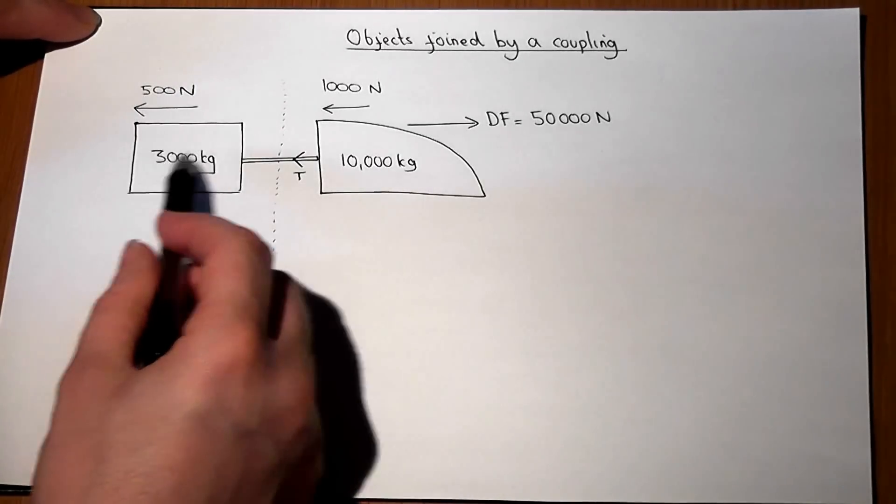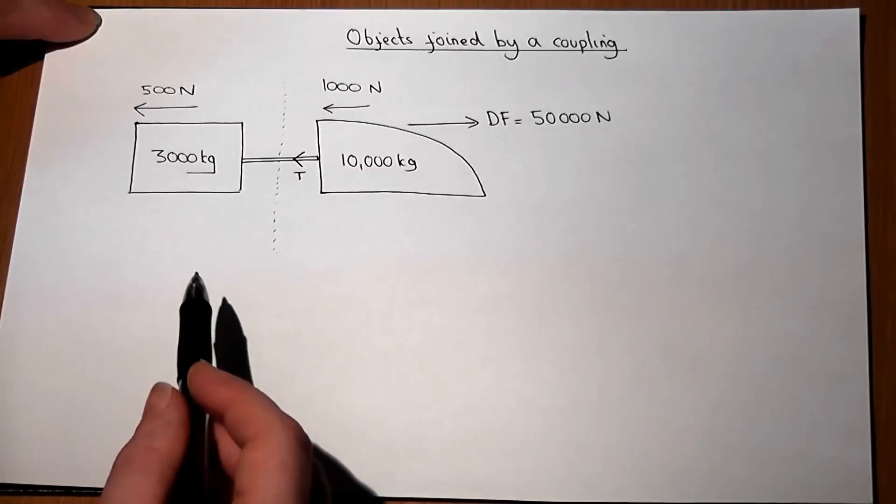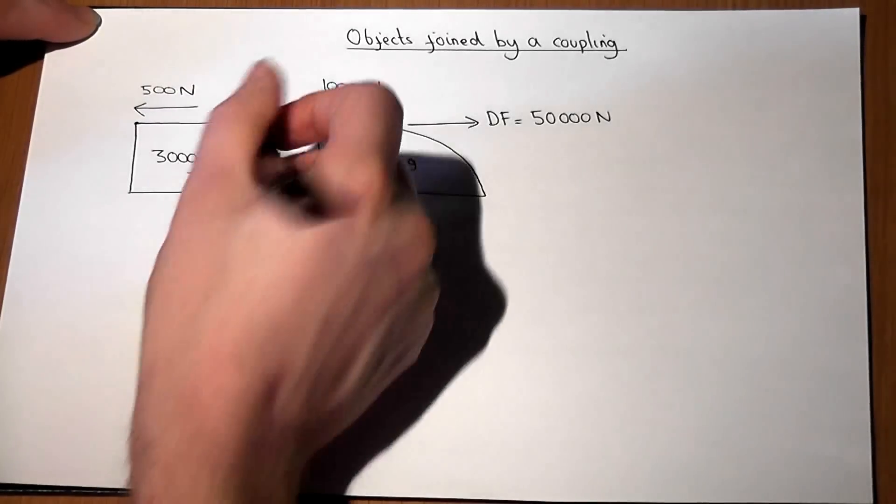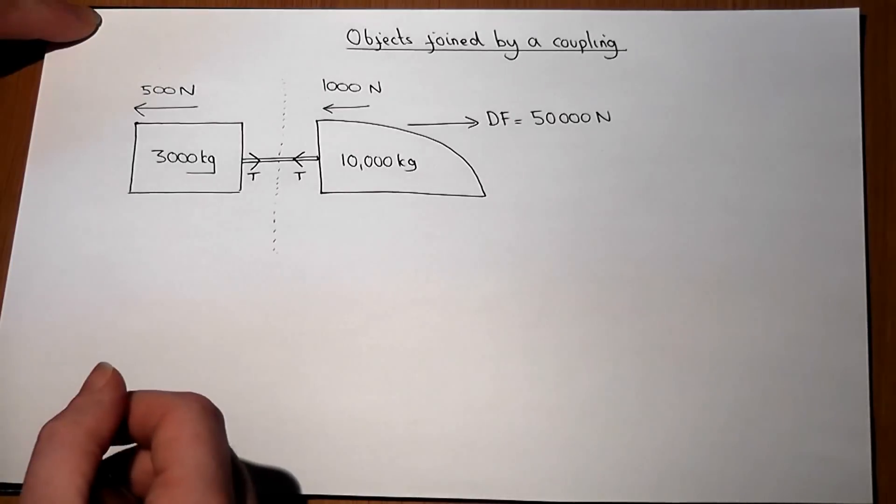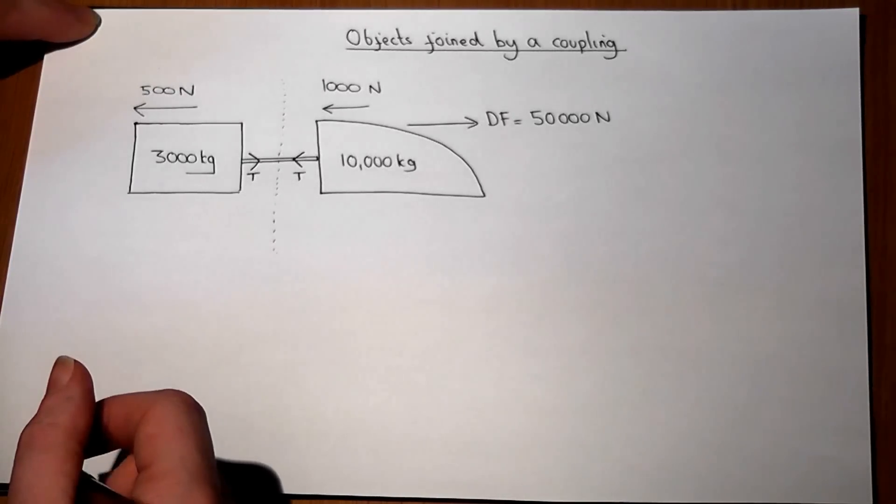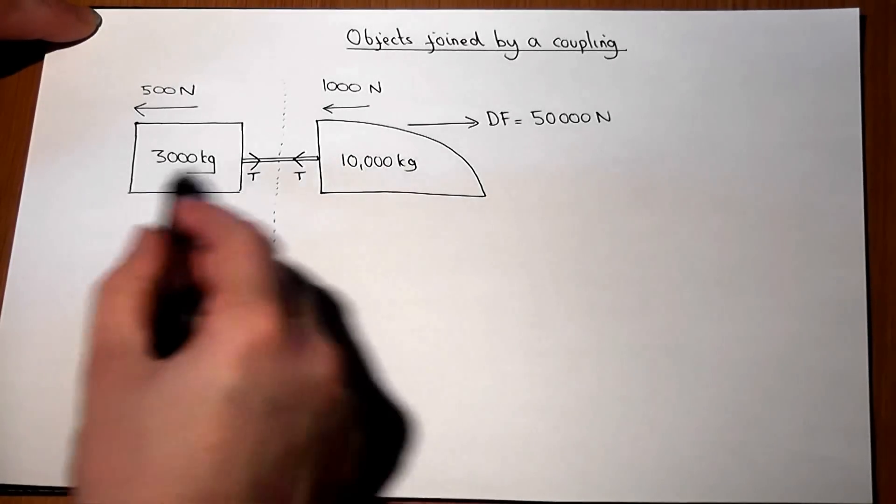However, the trailer is being pulled along by the tow bar, so therefore the trailer feels an opposing force and the tension pulling it to the right.